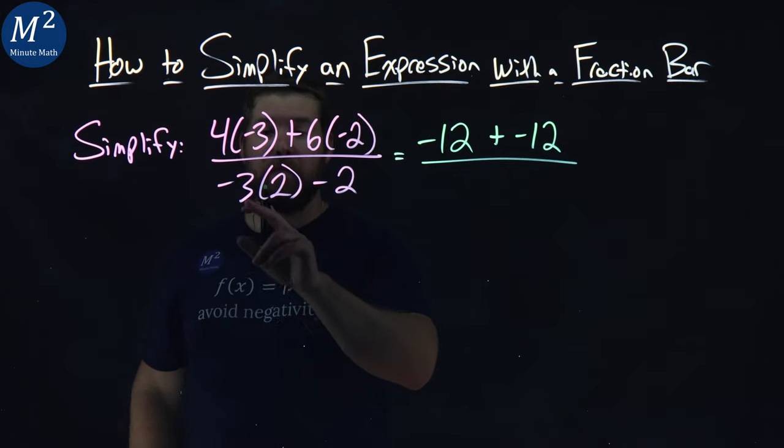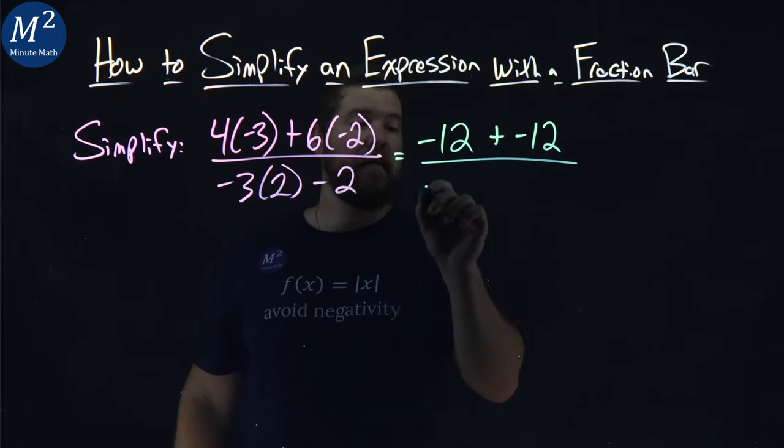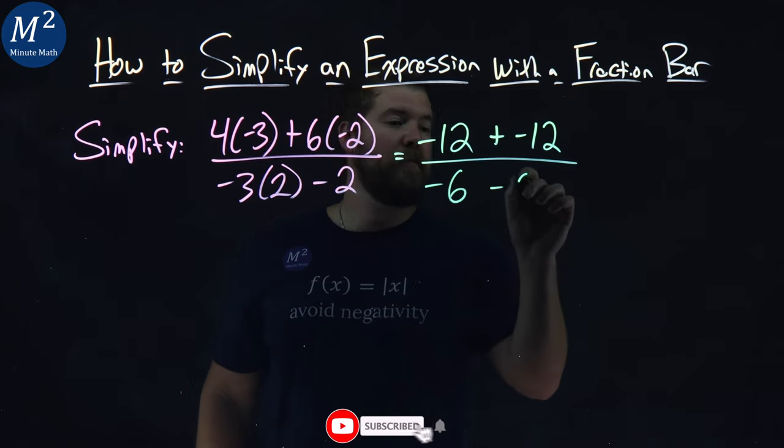Now the denominator, first step, negative 3 times 2 is multiplication, that's going to come first, and that's negative 6, and then we have minus 2 here.